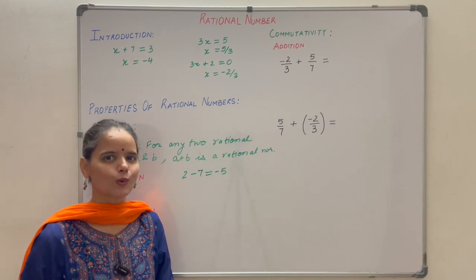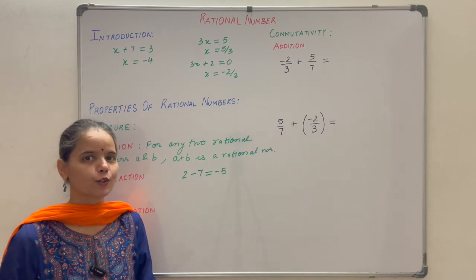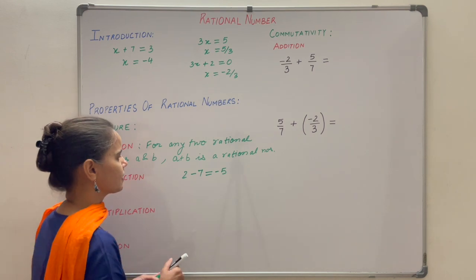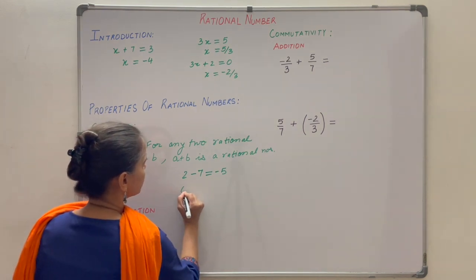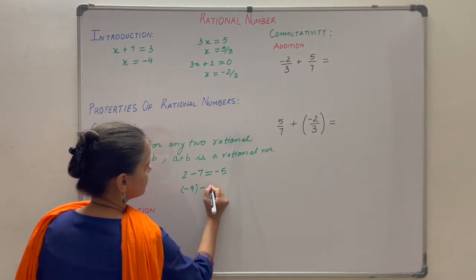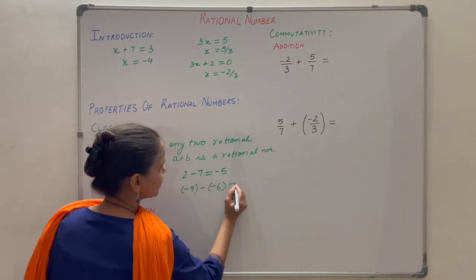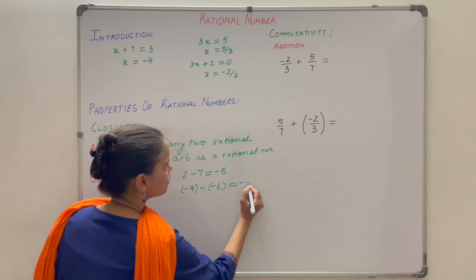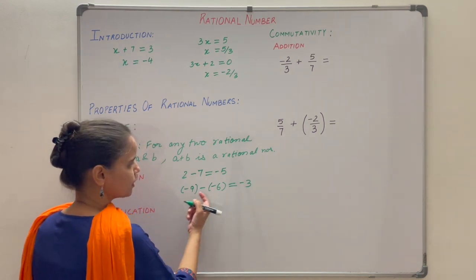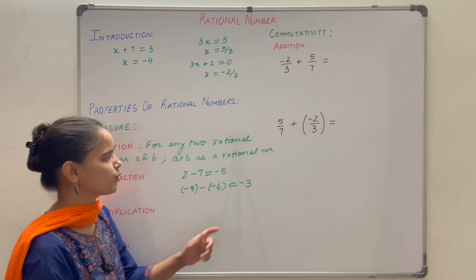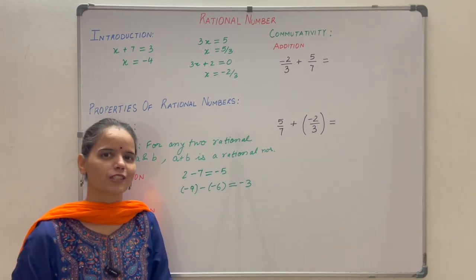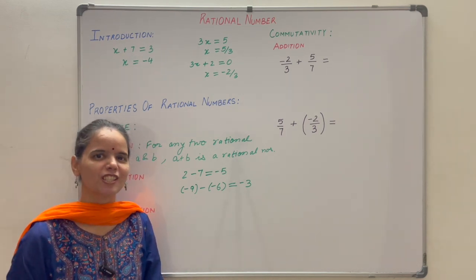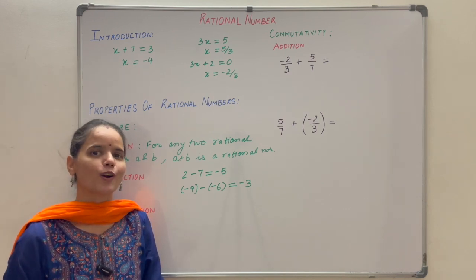But integers are closed under subtraction — whenever you subtract any two integers you will always get an integer. For example, minus 9 minus minus 6: minus into minus becomes plus, so minus 9 plus 6 gives minus 3. You subtracted two integers and got an integer. You can verify this with more examples.